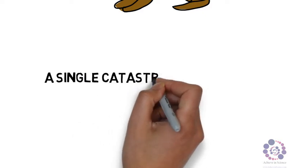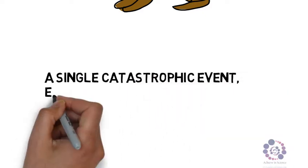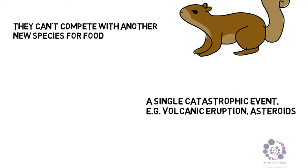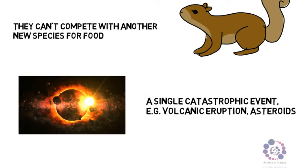It could be that there is a single catastrophic event, for example a volcanic eruption or asteroids hitting the earth.